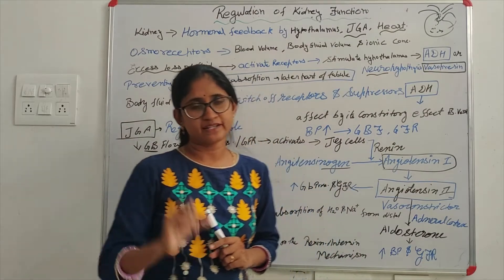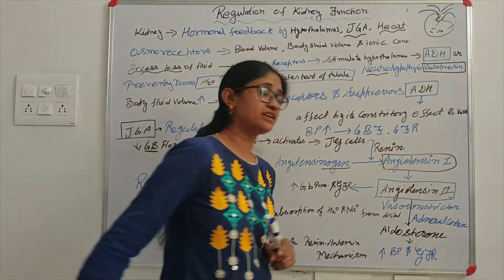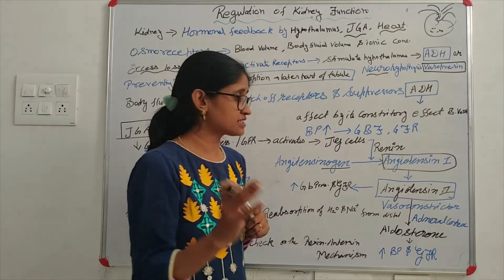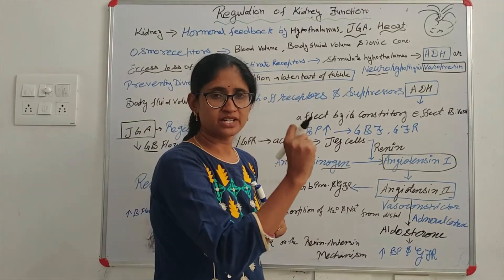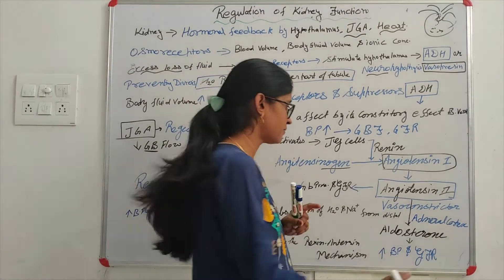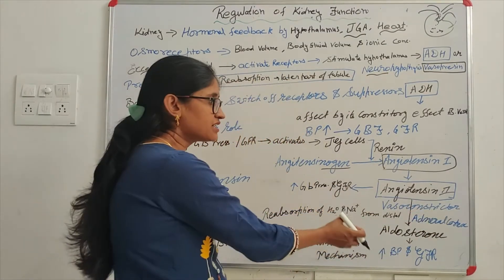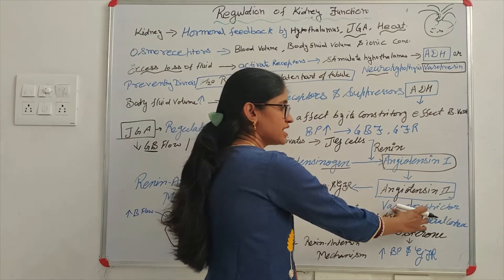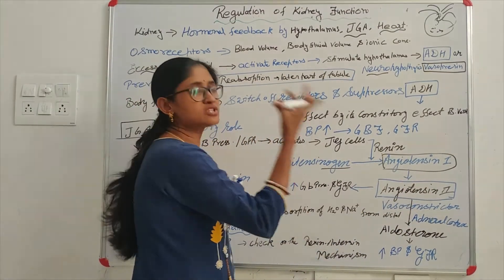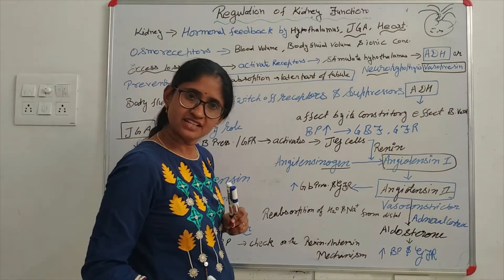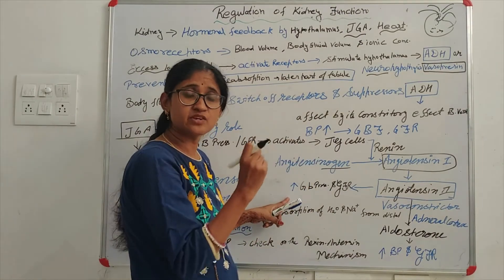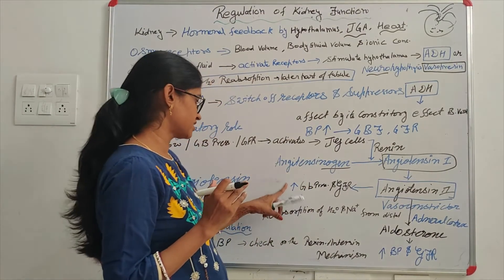Angiotensin II is important. Angiotensin II is a vasoconstrictor — it works to constrict blood vessels. When there is vasoconstriction, you should remember: pressure and flow changes. So in this case, Angiotensin II increases blood pressure and glomerular filtration rate both increase — restoring glomerular blood flow.